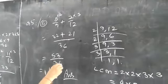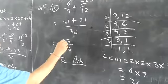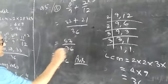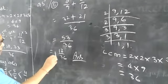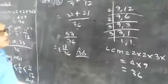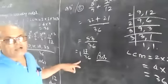53 divided by 36, and 53 divided by 36, then we will get 1 whole 17 upon 36, which is required answer.